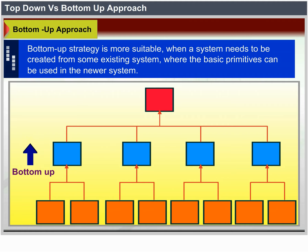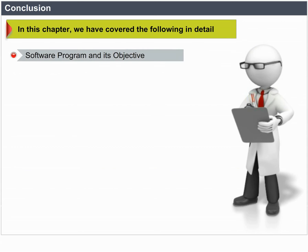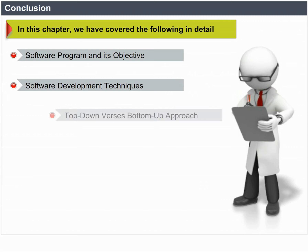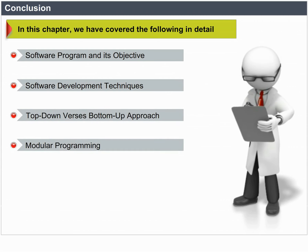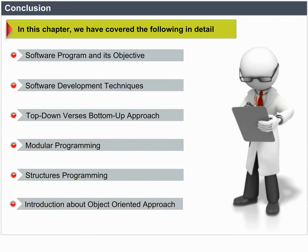Conclusion. In this chapter, we have covered the following in detail: software program and its objective, software development techniques, top-down versus bottom-up approach, modular programming, structured programming, and introduction about object-oriented approach.